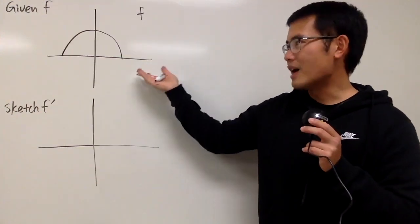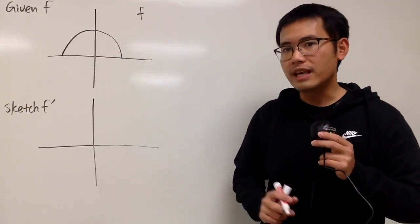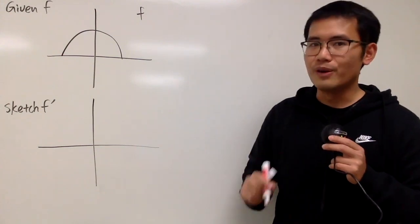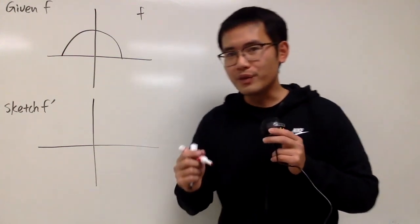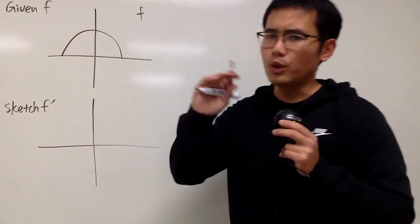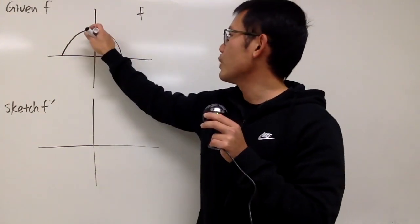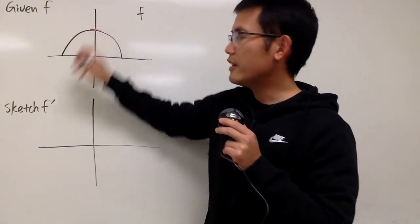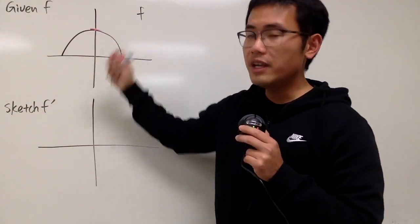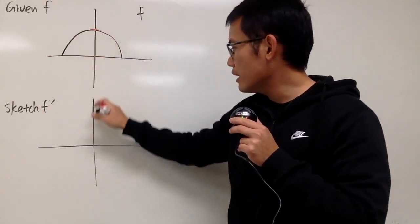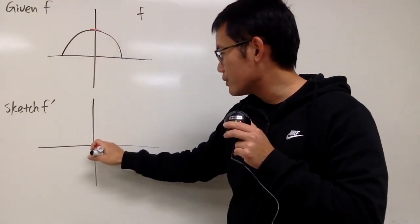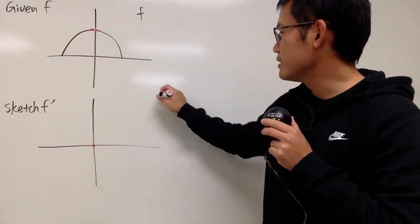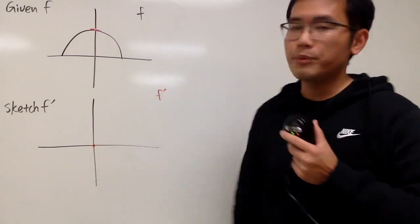Here we are given the graph of the original function, and we'll try to sketch its derivative. Look for the easy number — namely the horizontal tangent line. As we can see, we have one right here. So that tells us f-prime will be 0 over there. I will have to go down and hit 0 right here, and this is going to be my f-prime graph.